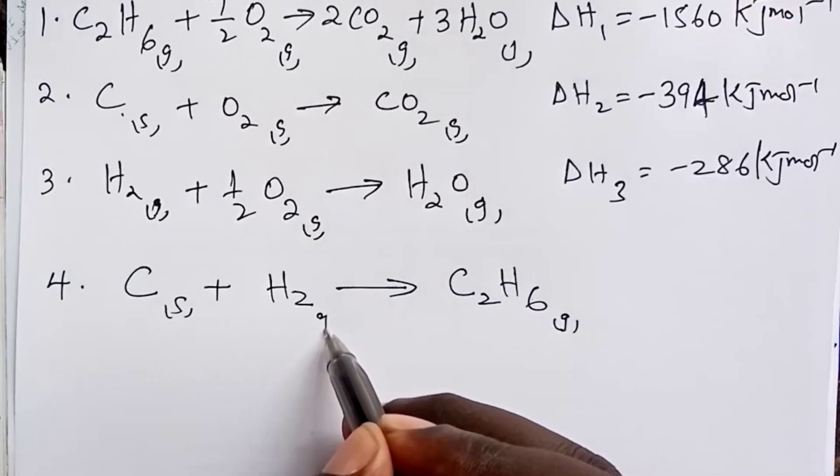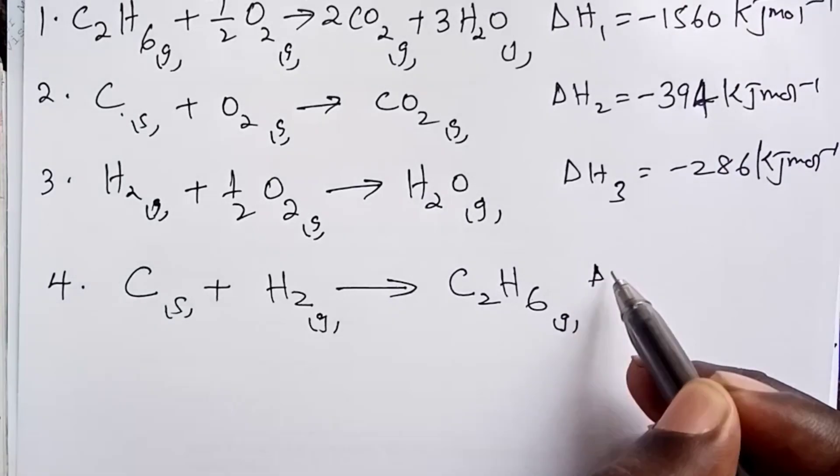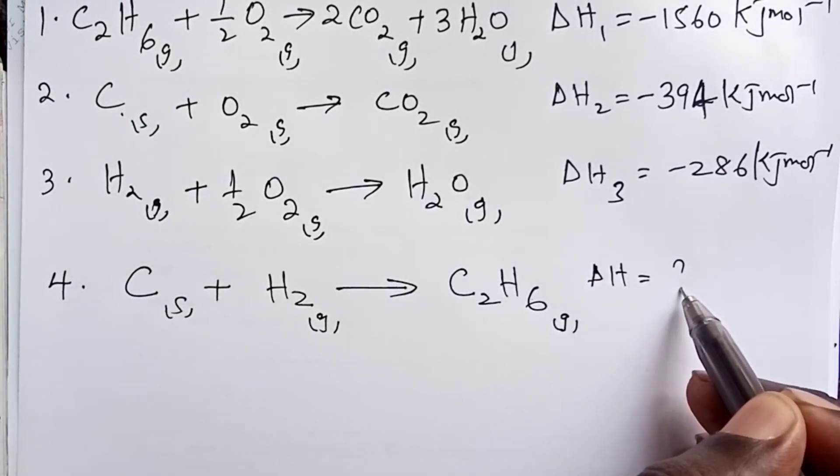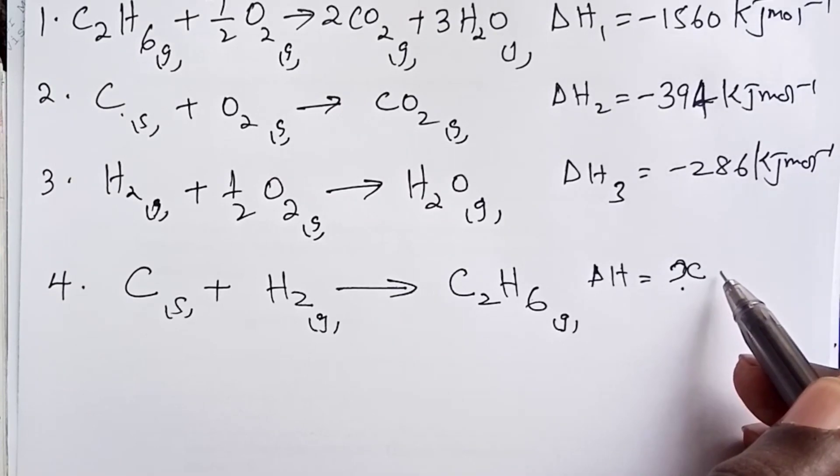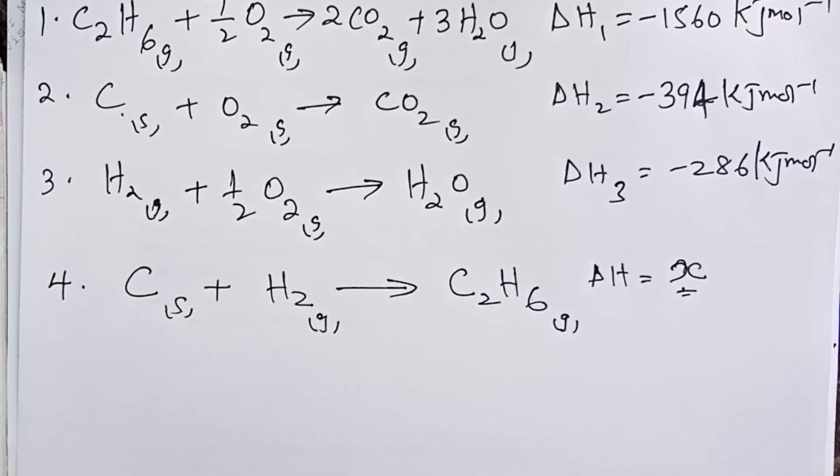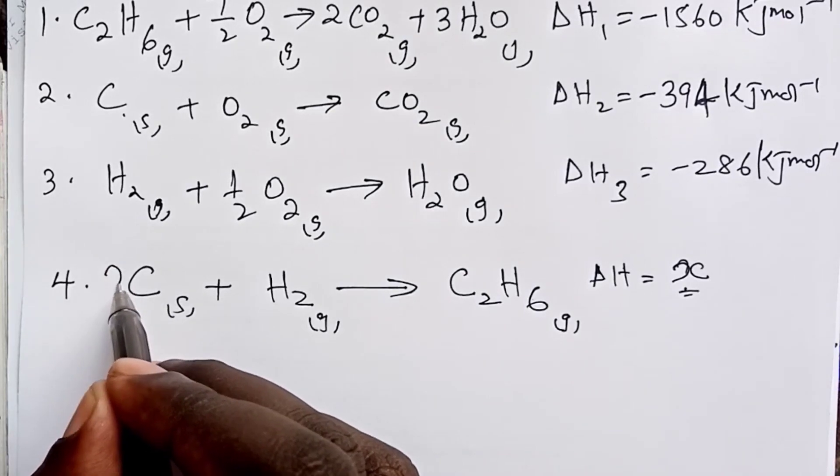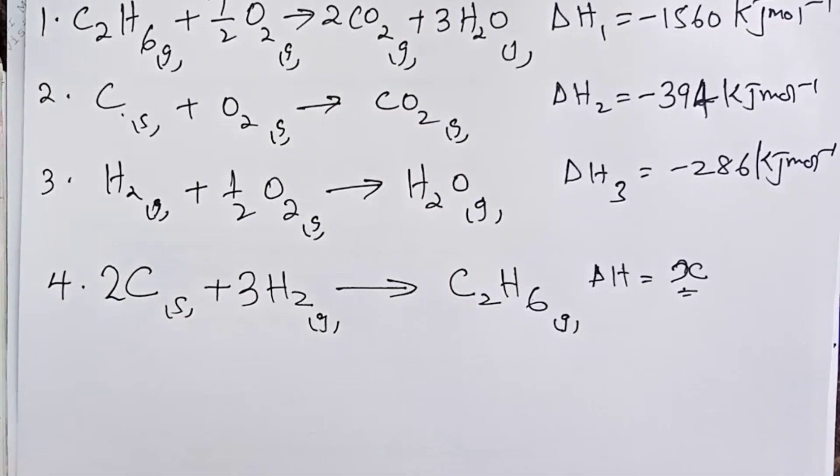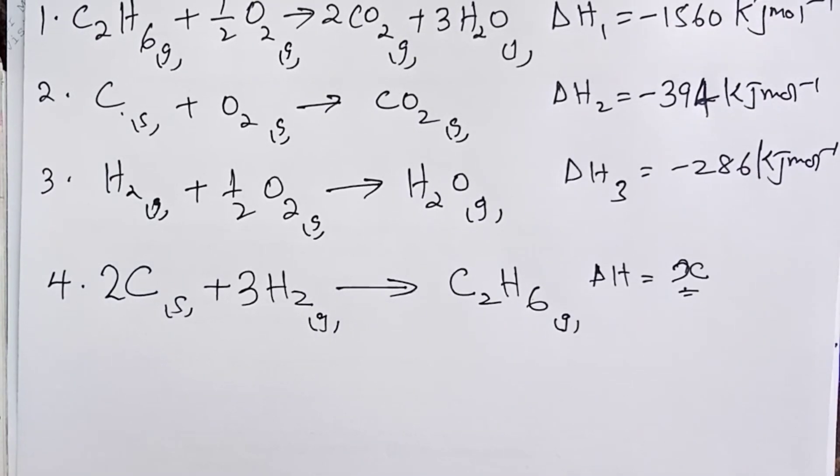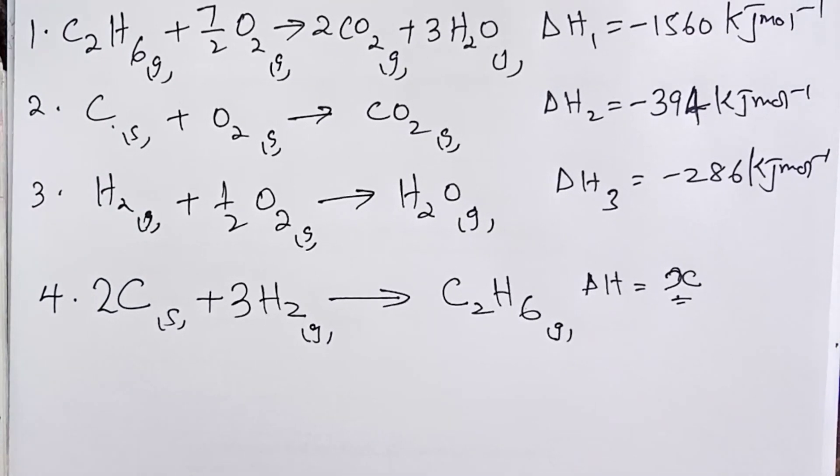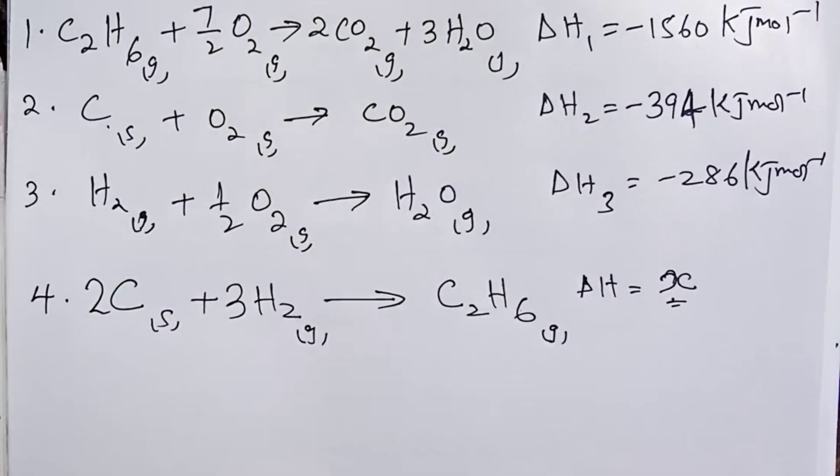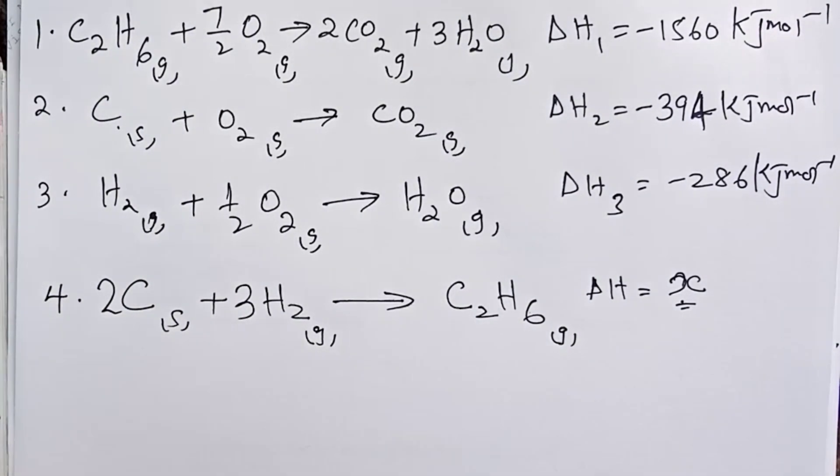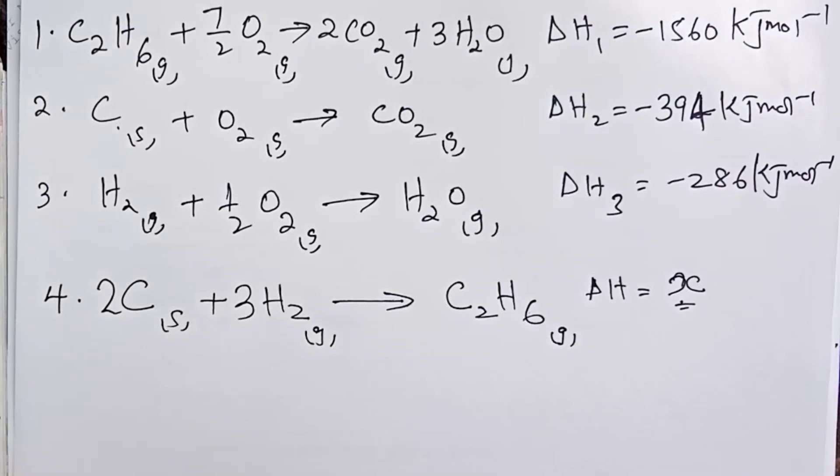So the first thing we shall do to make our fourth equation is to write the equation for the formation of ethane from its constituent elements. Constituent elements of ethane is carbon and hydrogen. So here we are. The amount of heat given here is what we are being asked. We do not know. So let us call it x kilojoules per mole. And of course, we need to balance a two on carbon and a three on hydrogen.